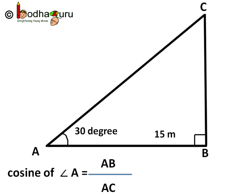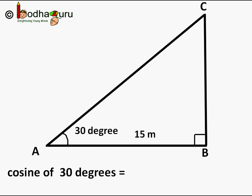We know the cosine of angle A is equal to AB by AC. Angle A is equal to 30 degrees. So cosine of 30 degrees is equal to 15 by AC.